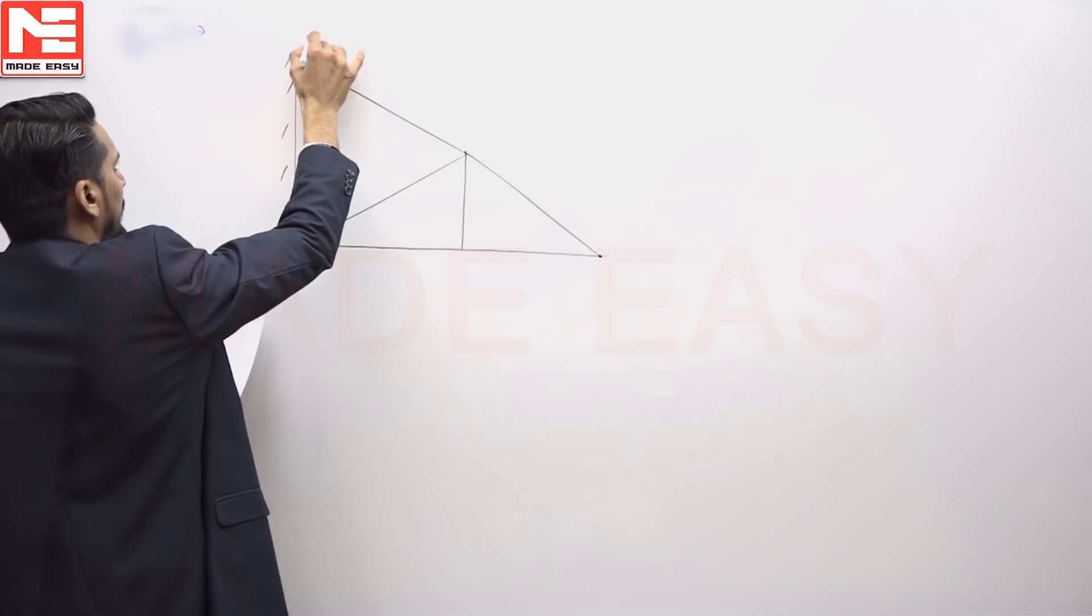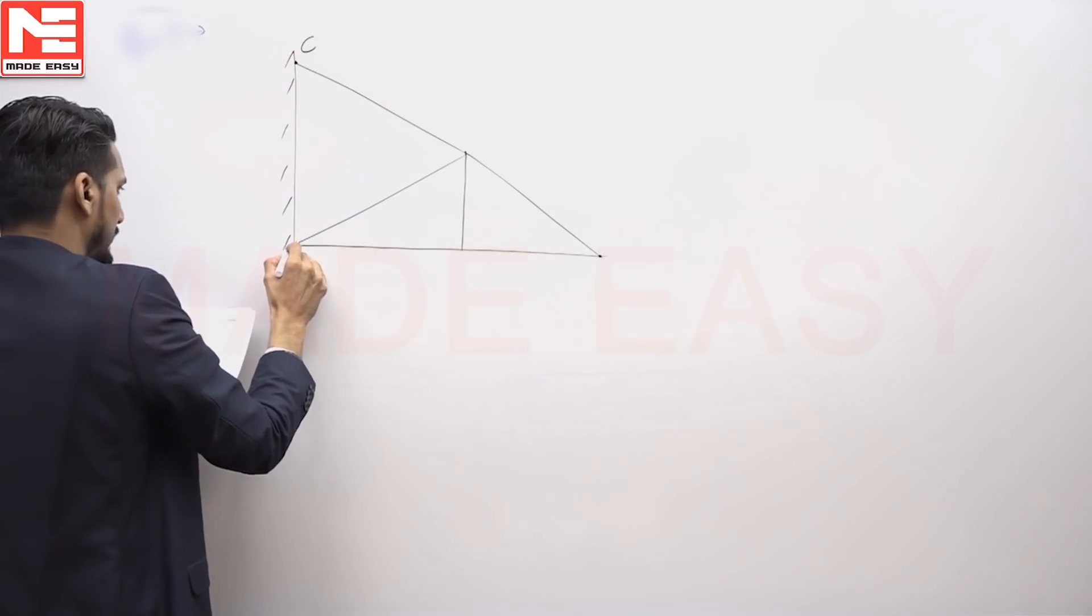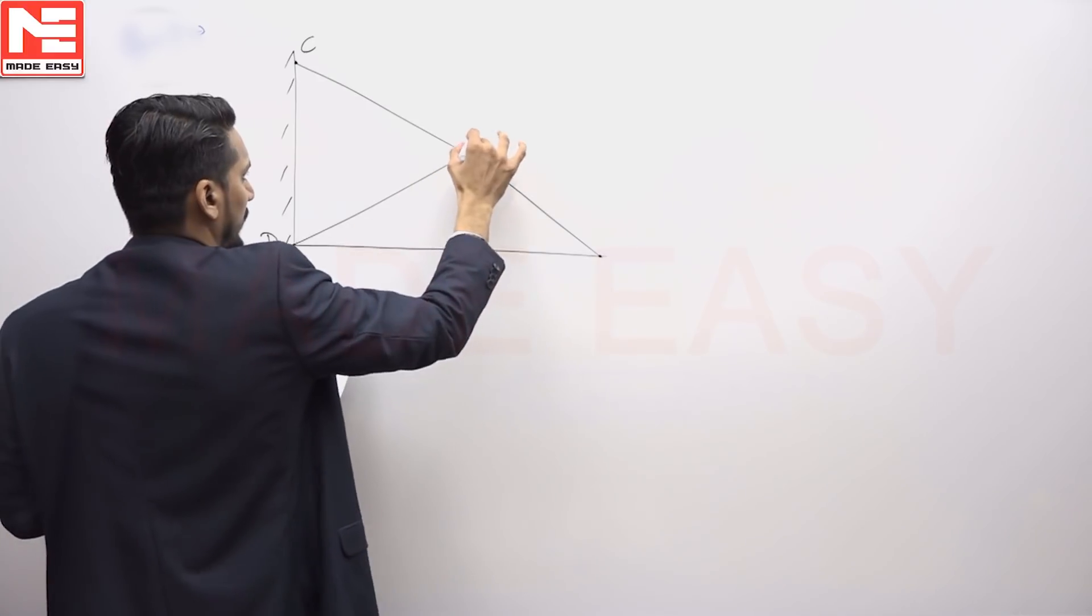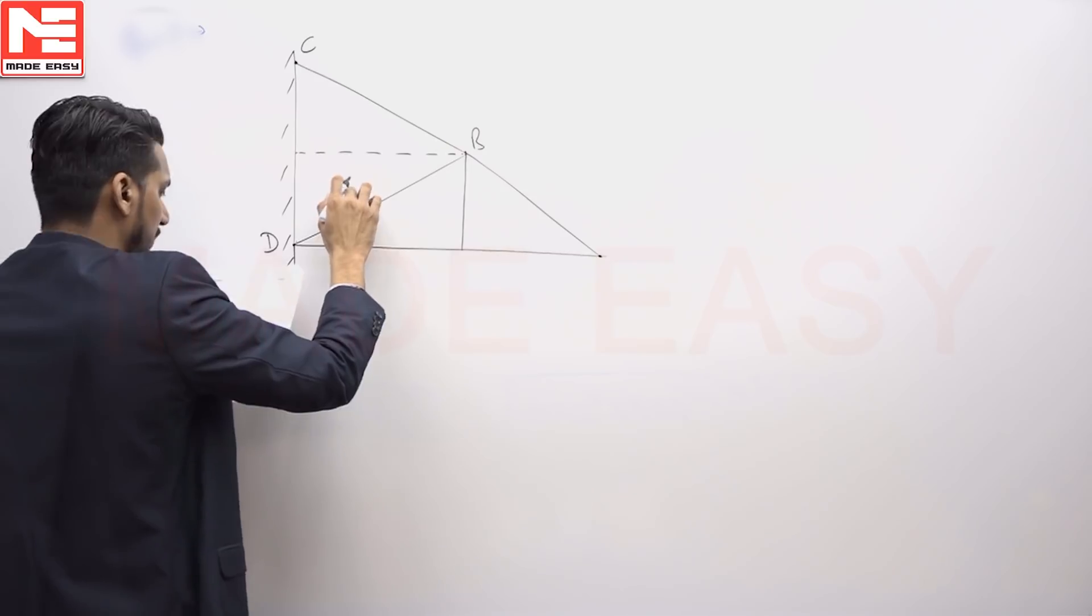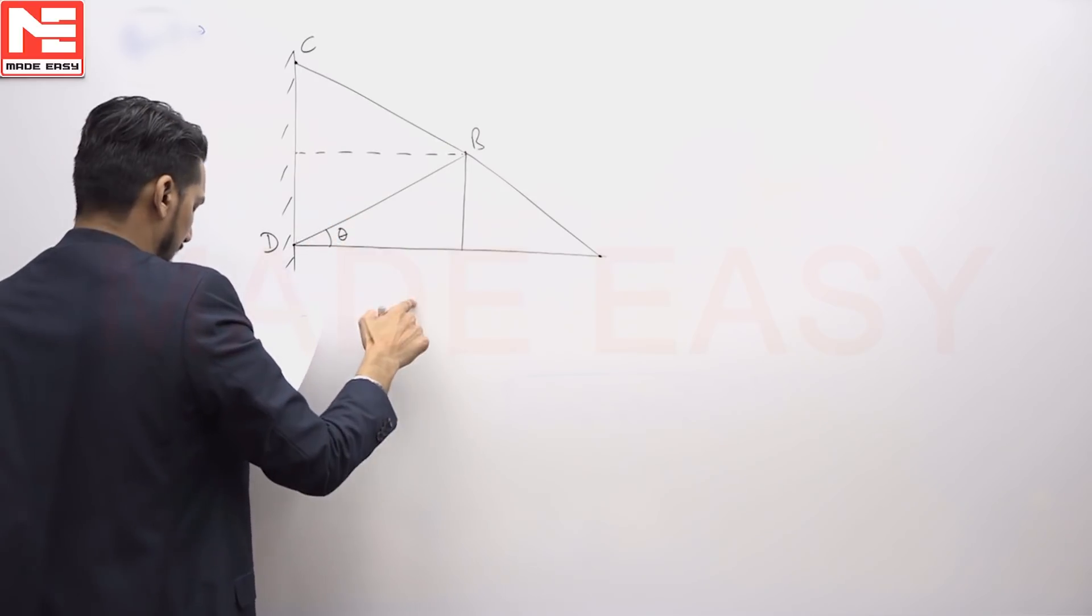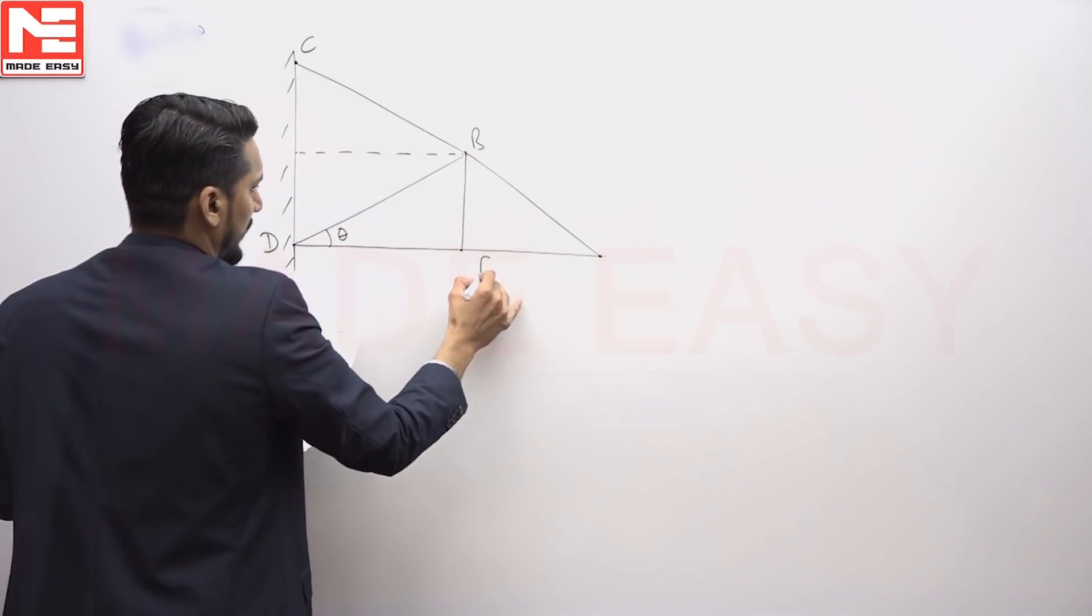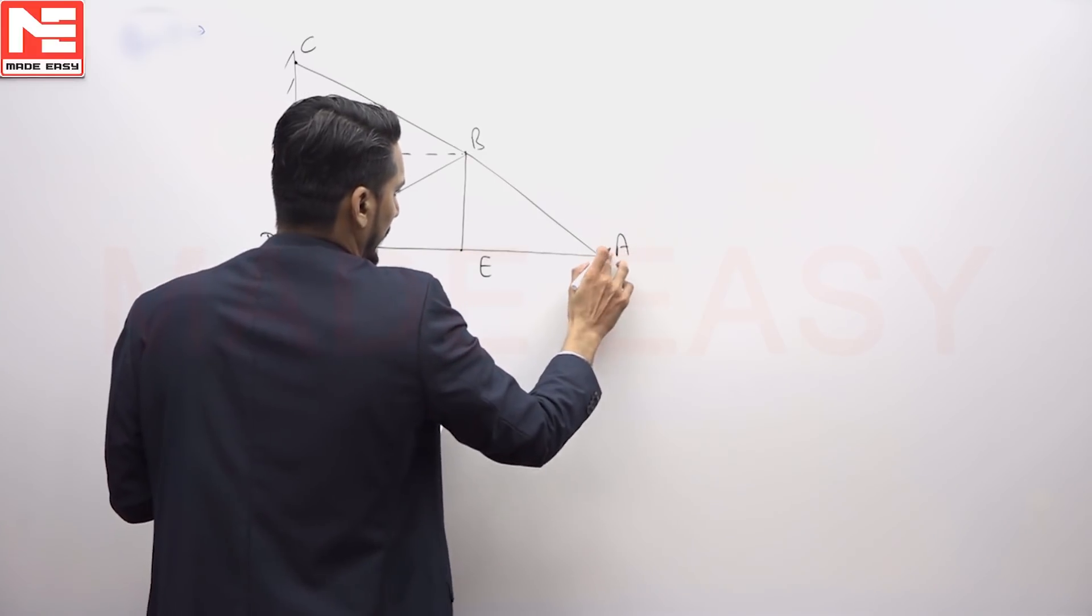This is joint C, this is given as joint D, this is given as joint B. Apart from this, this angle is given as theta, this point is E and this joint is A.